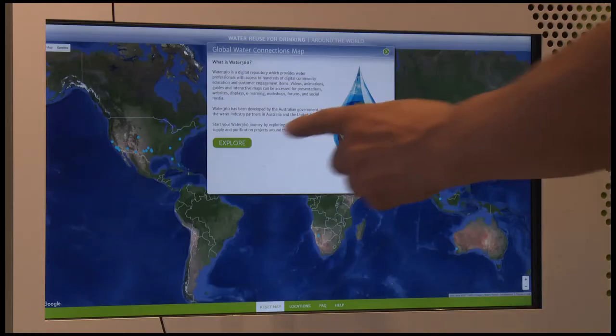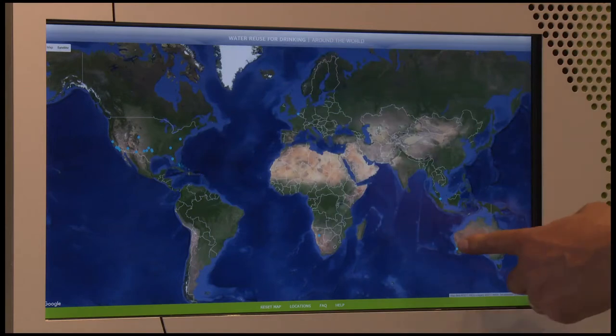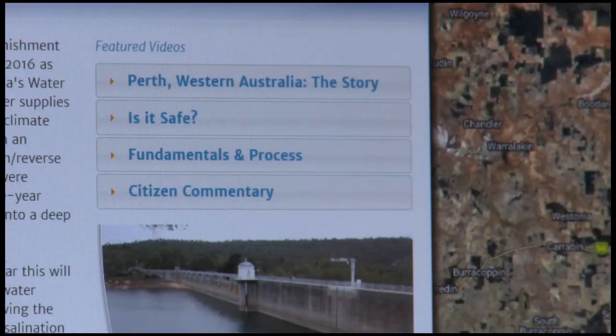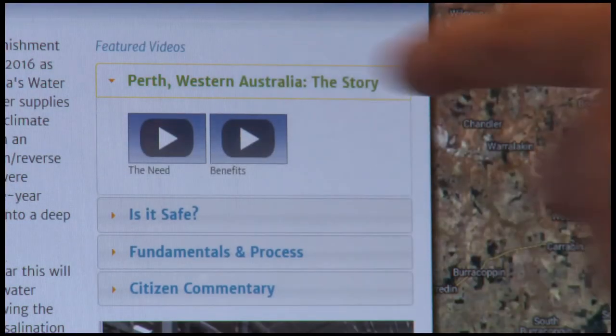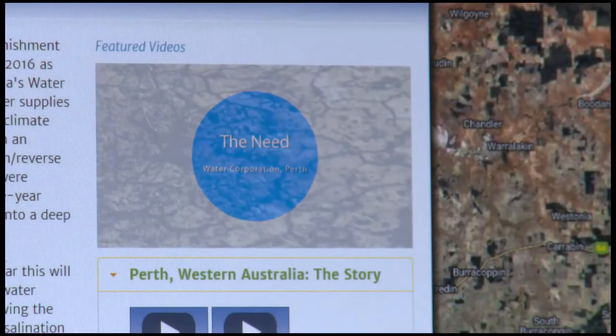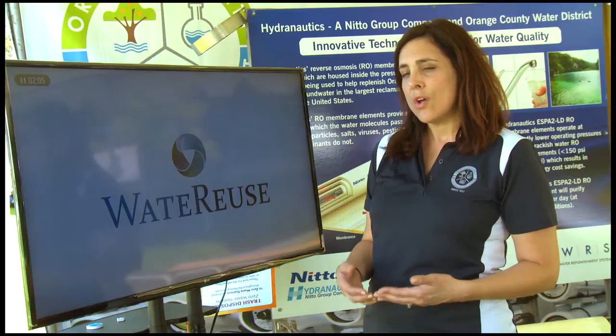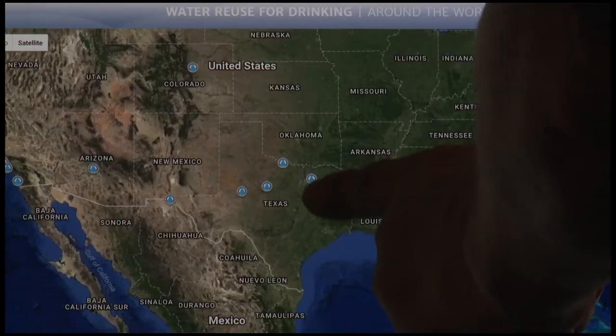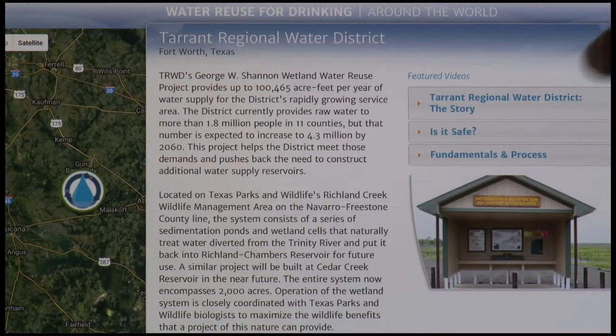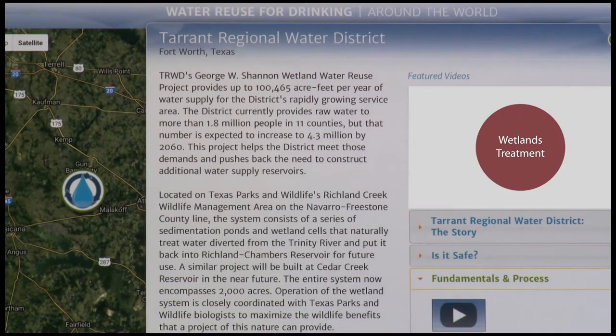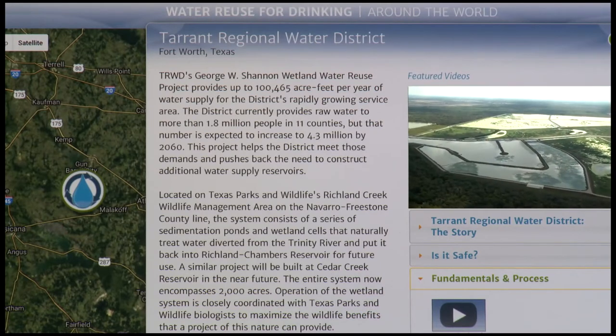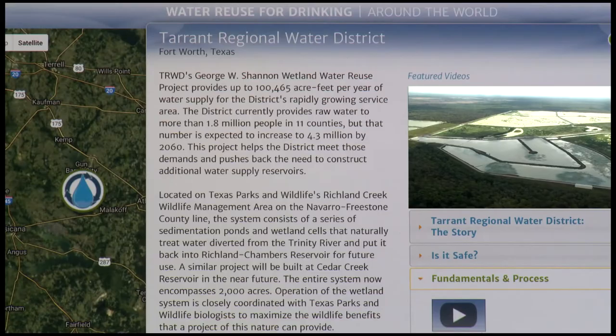The Global Connections Map that we utilize at our H2O Learning Center is a very important tool to teach people about how water reuse is happening all over the world, not just in our community. It's also a great tool to allow us to explain how water reuse isn't cookie cutter. It's done in different ways in different communities depending on the existing infrastructure, resources, costs, and so forth.